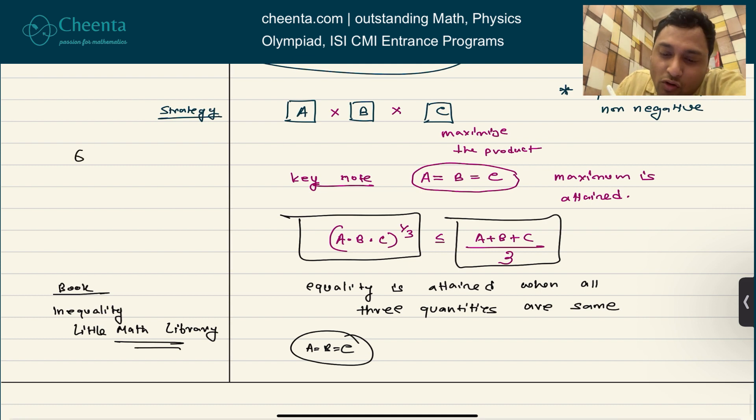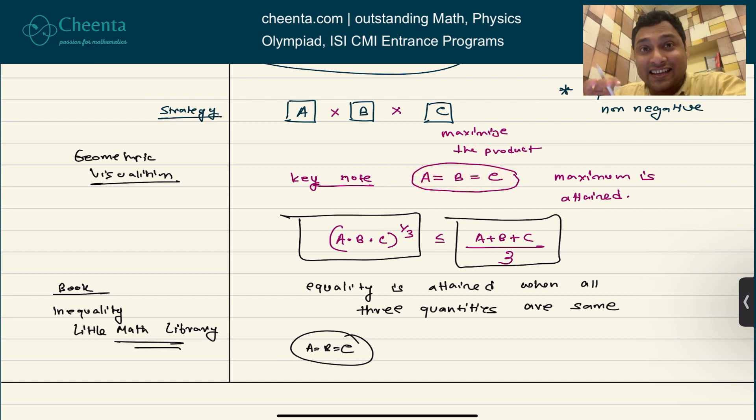There is a geometric connotation, a geometric visualization of this particular fact that I just said: that A times B times C is maximum when all three quantities are equal. This has a very useful relation with the volume of a rectangular parallelepiped. Can you think about it? Can you tell me what would be that geometric visualization or geometric statement that actually describes this very algebraic statement in the comment section? It's really fun how you can connect algebra and geometry like this.